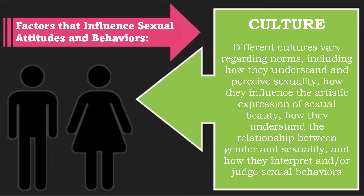Culture: Different cultures vary regarding norms, including how they understand and perceive sexuality, how they influence the artistic expression of sexual beauty, how they understand the relationship between gender and sexuality, and how they interpret or judge sexual behaviors such as premarital sex, the age of sexual consent, homosexuality, and others. Societies that value marriage, for example, are likely to oppose adultery. Individuals are socialized to those morals and values starting at a very young age, by their family, education system, peers, media, and religion.